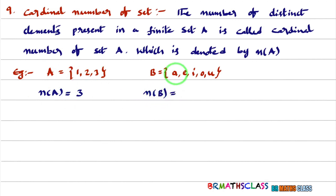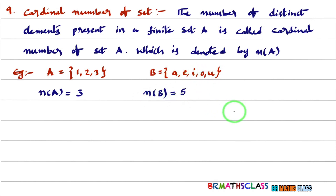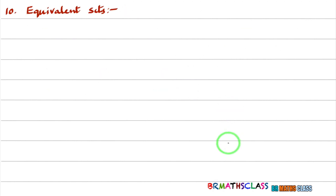What is the cardinal number of set B? 1, 2, 3, 4, 5 — total five elements are present. So the cardinal number of set B is 5.